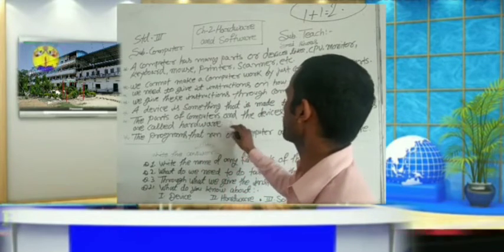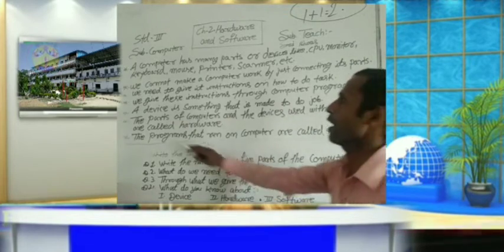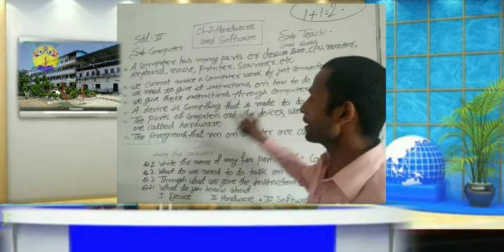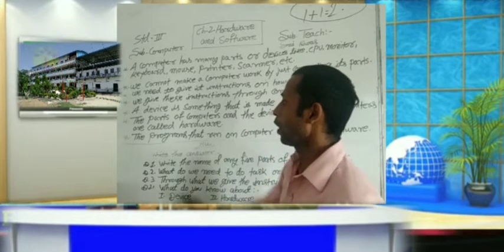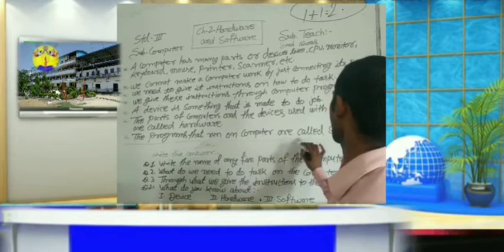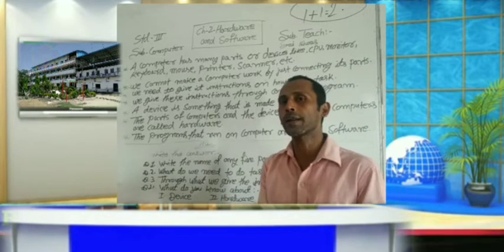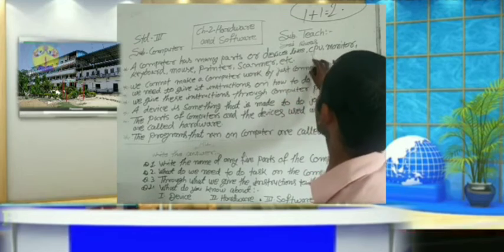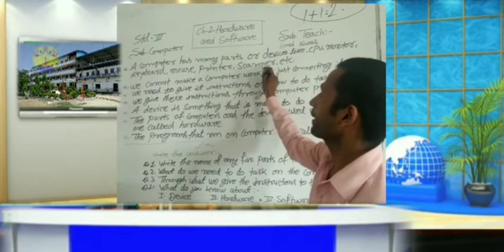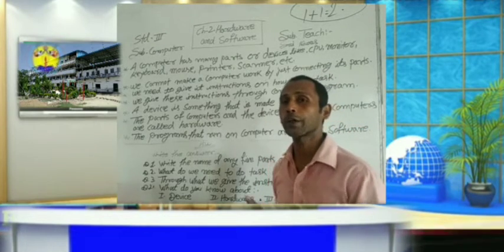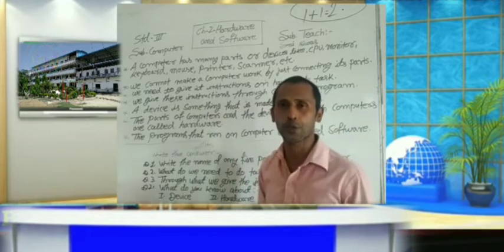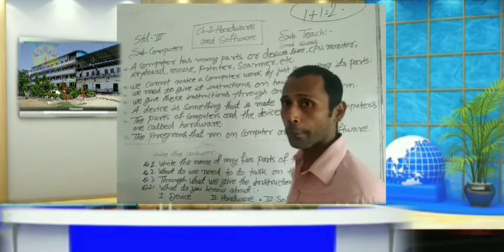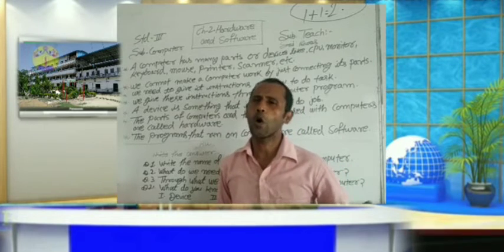The parts of computers and the devices used with computers are called hardware. The programs that run on computers are called software. These are all hardware parts — we can see and touch them. Examples of programs, which are software, include the Calculator program, Notepad program, WordPad program, Paint program, and many other programs.